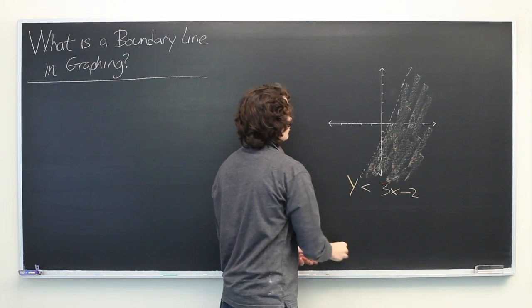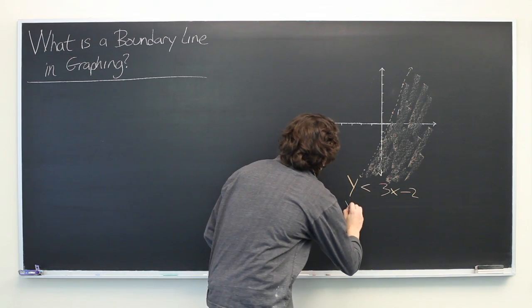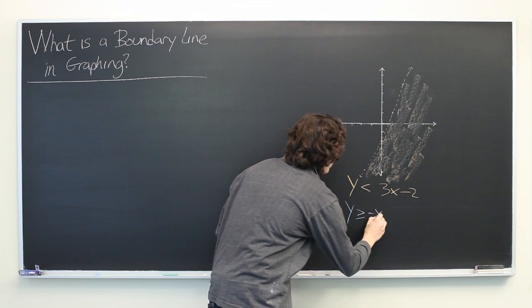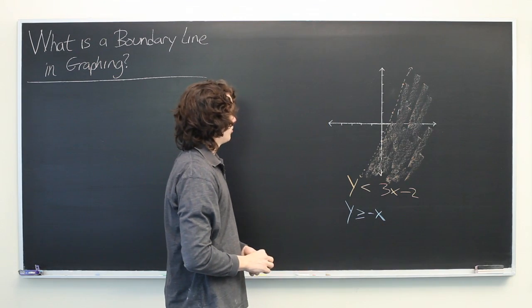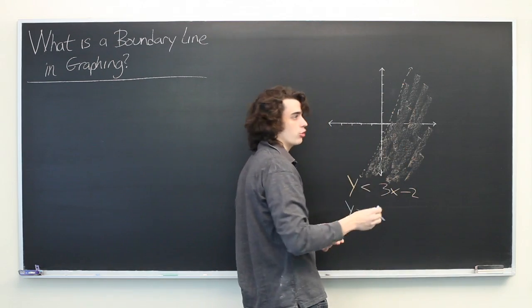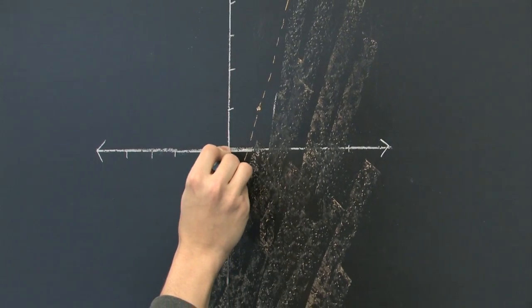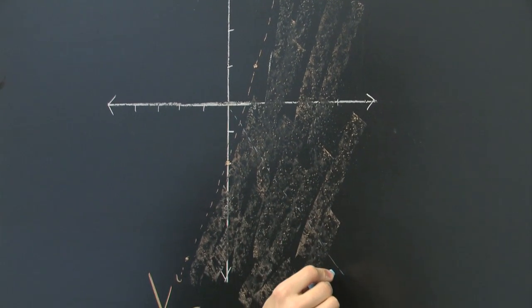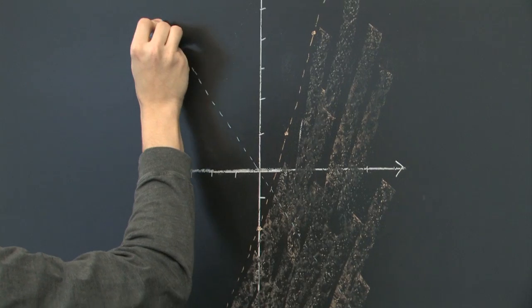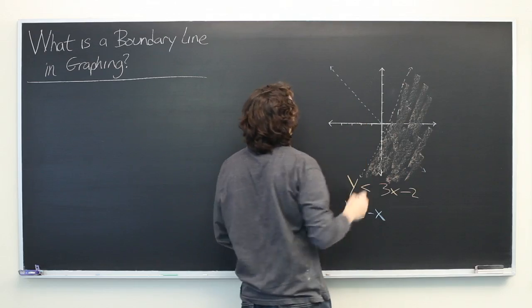But let's do another example. Let's say y is greater than or equal to negative x. So, the line y equals negative x should be fairly familiar. Something like that.